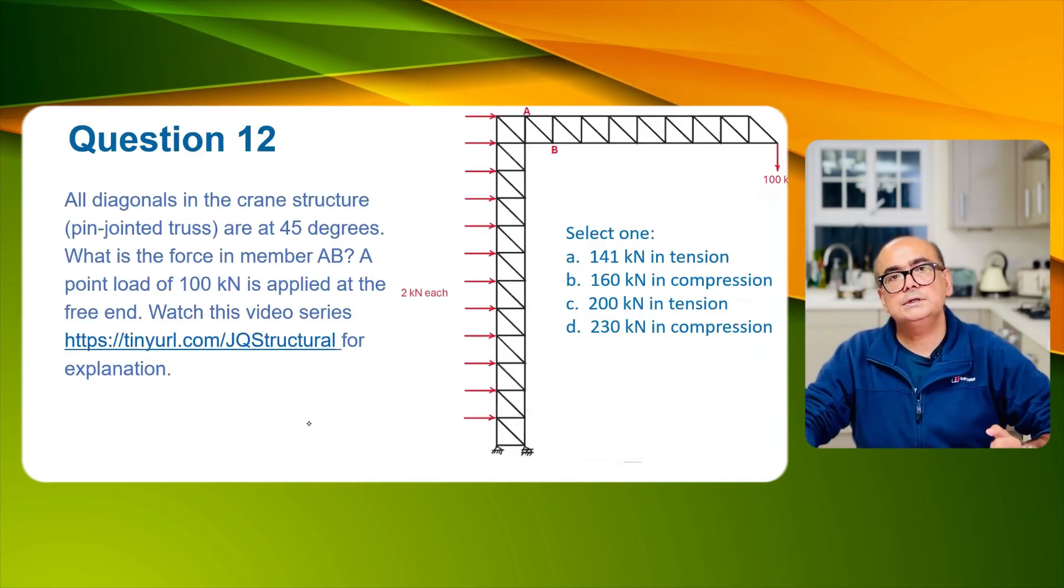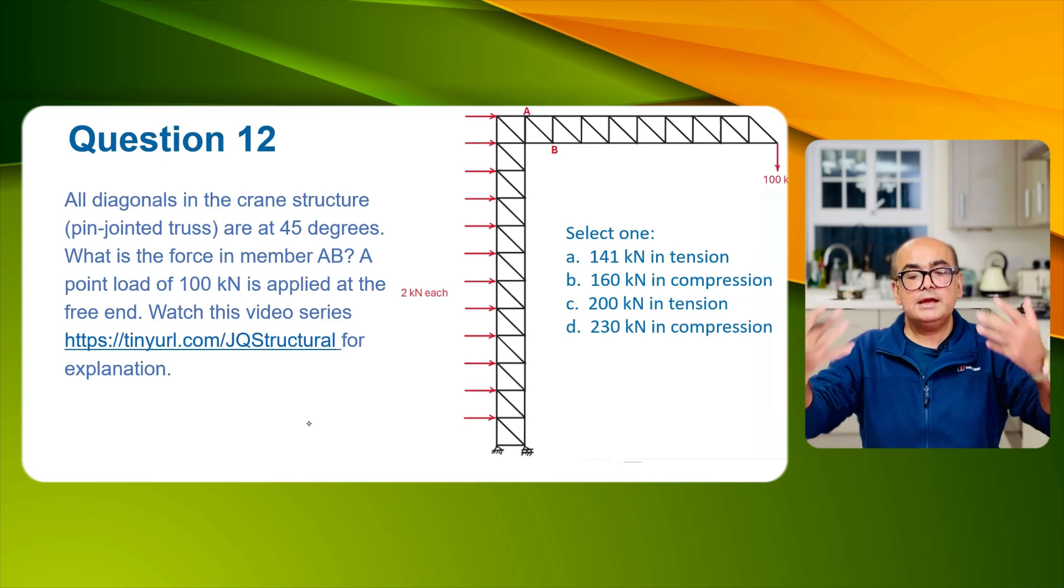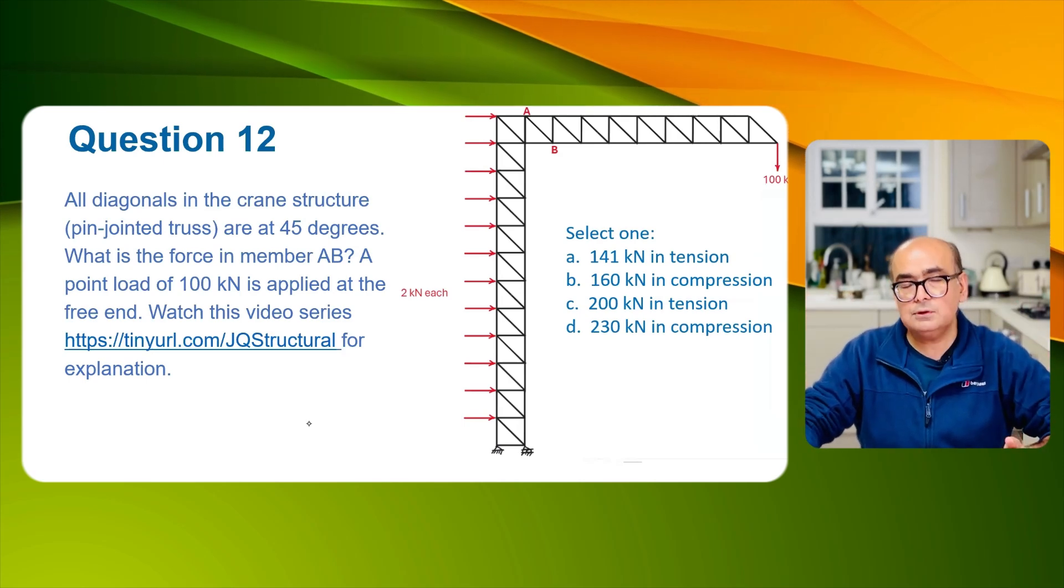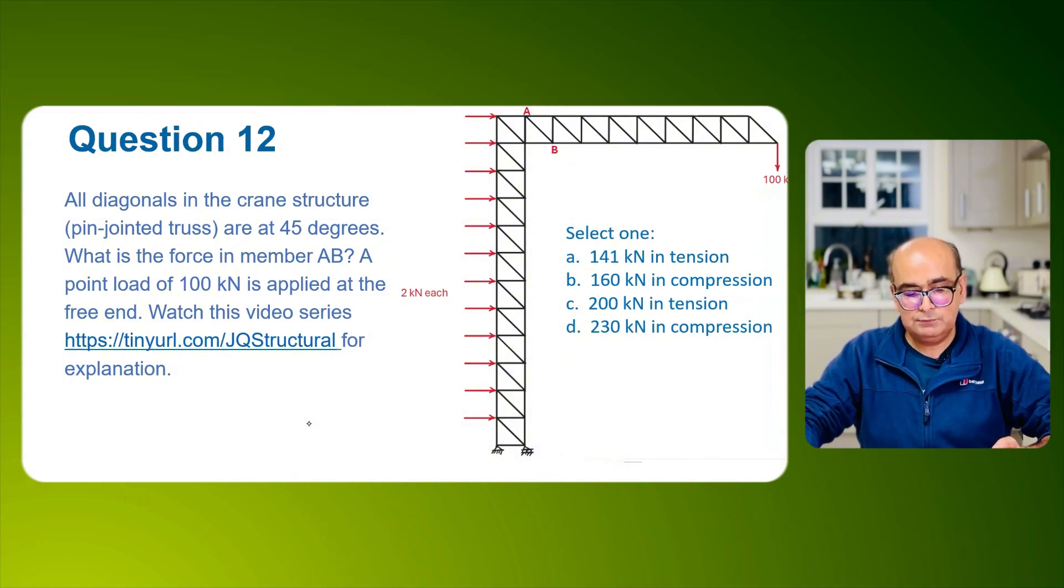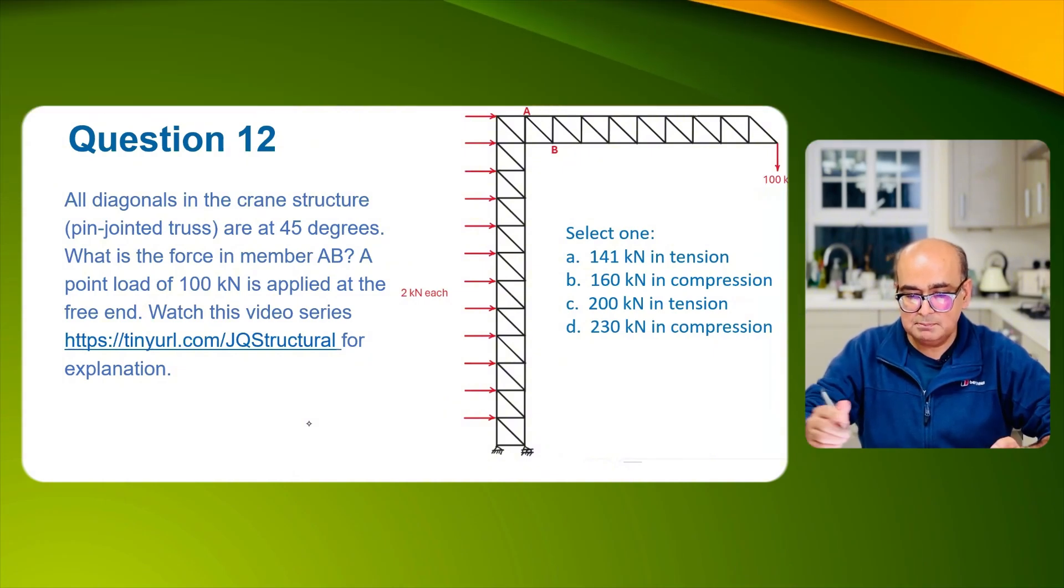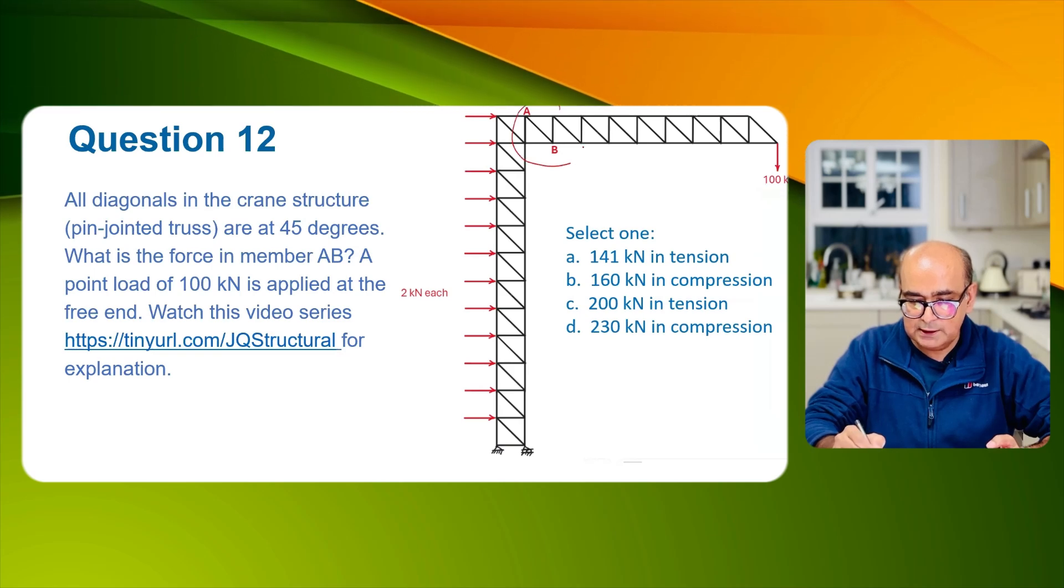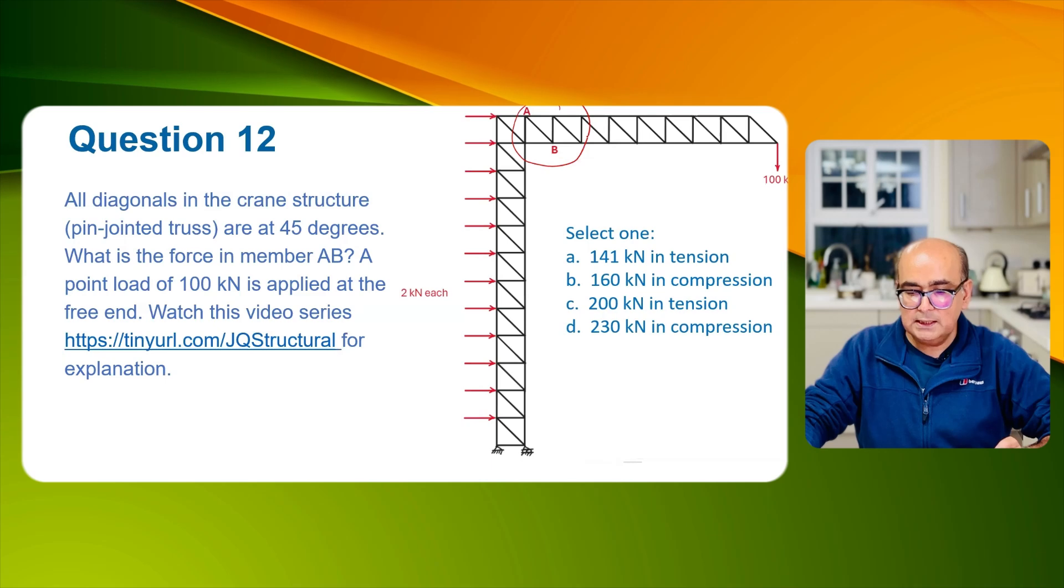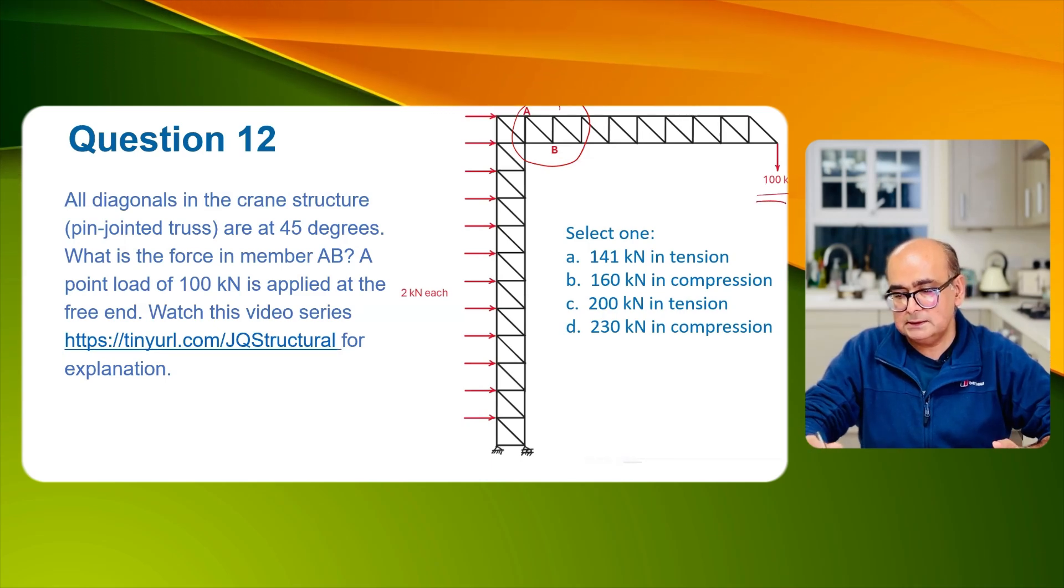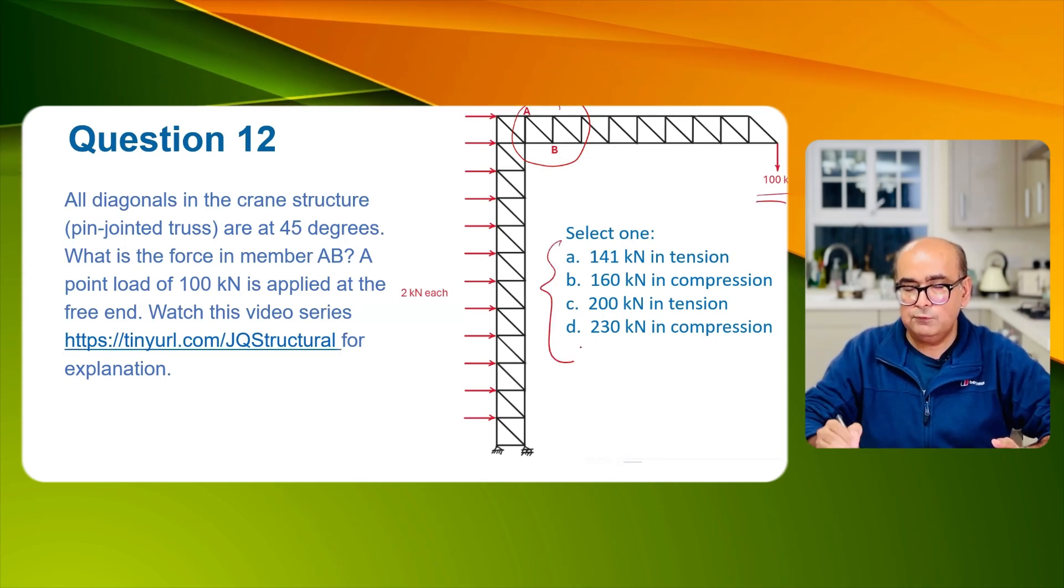Let me now move on to the next question which is a crane structure. So all diagonals in this crane structure pin jointed are inclined at 45 degrees. What is the force in member AB? This time we have to find out force in this member AB and 100 kN is applied at the end and there are four options.